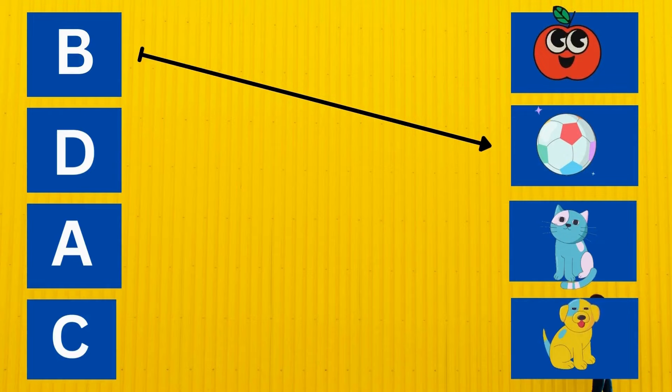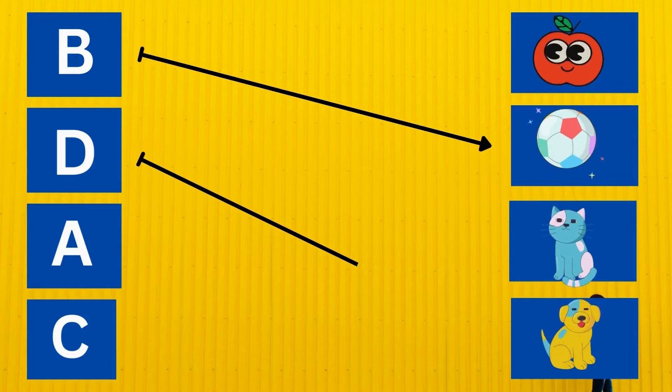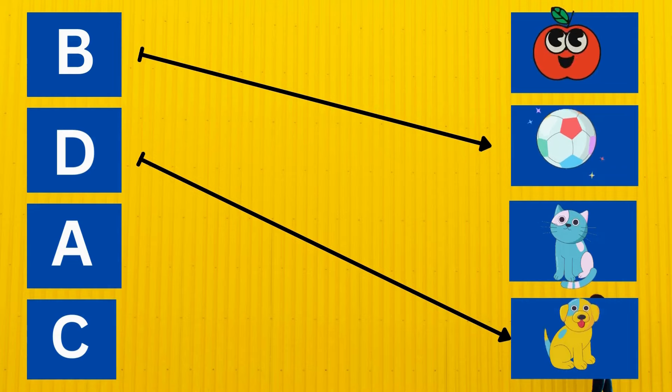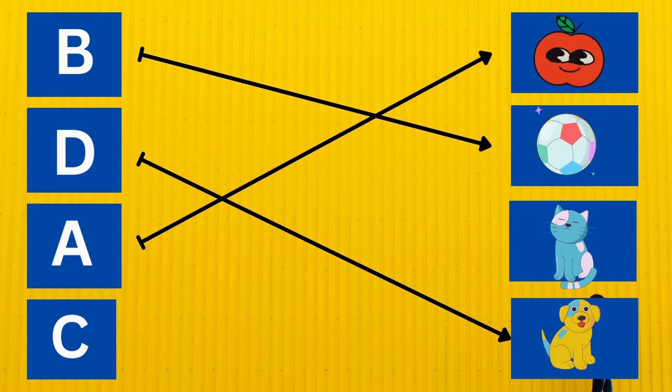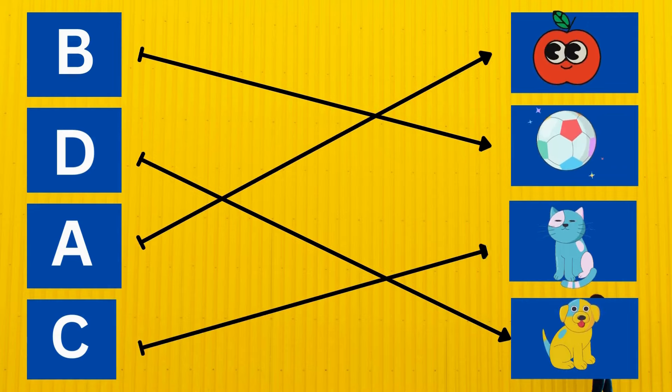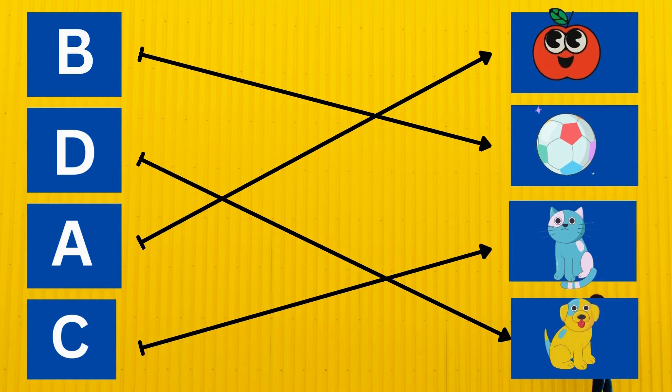B is for ball. D is for dog. A is for apple. C is for cat.